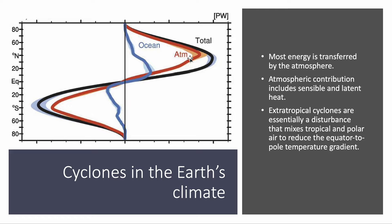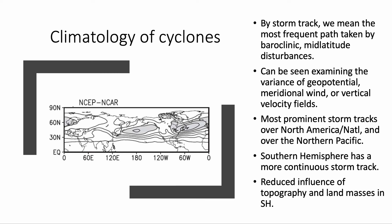The energy is transferred mostly by the atmosphere. This figure shows the annually and zonally averaged northward heat transport in petawatts, to balance the net radiative imbalance. The black line is the total, the red line is the contribution from the atmosphere, and the blue line is the contribution from the oceans. The contribution from the oceans is not negligible, but the contribution of the atmosphere is obviously dominant. This contribution includes sensible and latent heating fluxes. The Hadley cell stops around 30 degrees latitude, so it doesn't do much beyond that — but the atmosphere carries most of this energy. As it turns out, extra-tropical cyclones are crucial in mixing tropical air with polar air masses, acting like giant spoons that stir up the atmospheric circulation, reducing the pole-to-equator temperature gradient and redistributing energy on Earth.